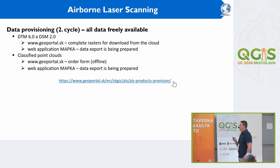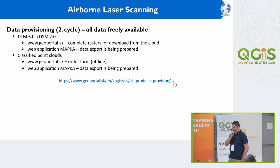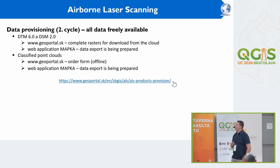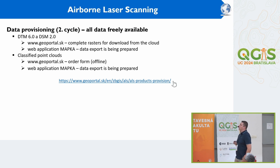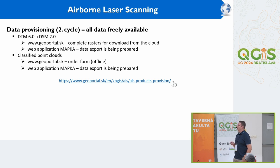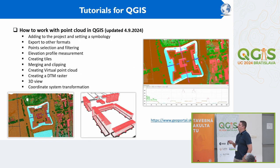For the second cycle, data is also provided through our GeoPortal as rasters for download. We are now also preparing data export from the web map application MAPKA, and this year it should be available there as well.